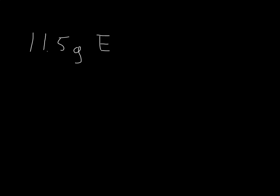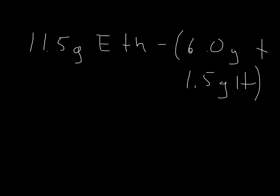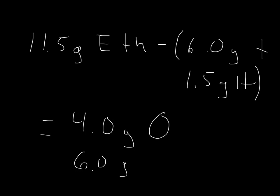If we recall, 11.5 grams of ethanol is what we started with. If we subtract from that the mass of the carbon plus the mass of the hydrogen, we should get the mass of the oxygen in the original sample, which in this case turns out to be 4 grams of oxygen. So now we know the mass of the oxygen, the mass of the carbon, and the mass of the hydrogen — we know all three. Now we can use those to find the empirical formula.